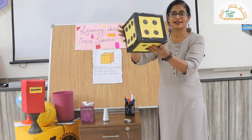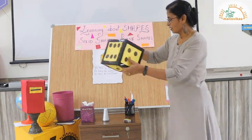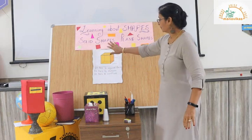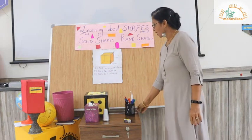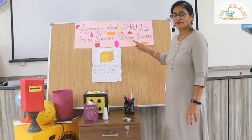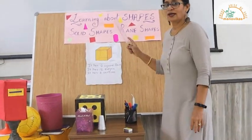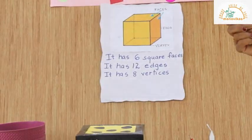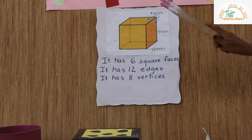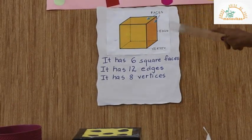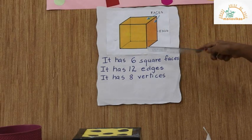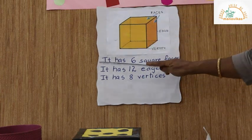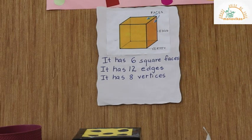Now let us learn about solid shapes. This is a solid shape — it's a dice. A tissue box is also a solid shape; it is a cube. The surface of a solid shape is called a face. When two faces meet at a line, it is called an edge. When three edges meet at a point, it is called a corner or a vertex.